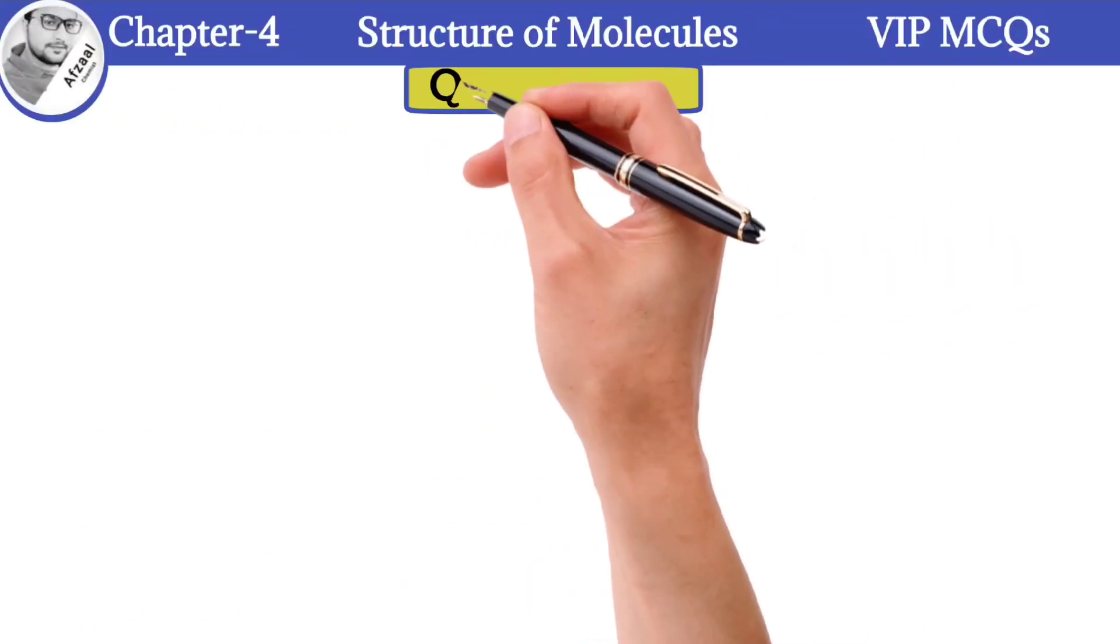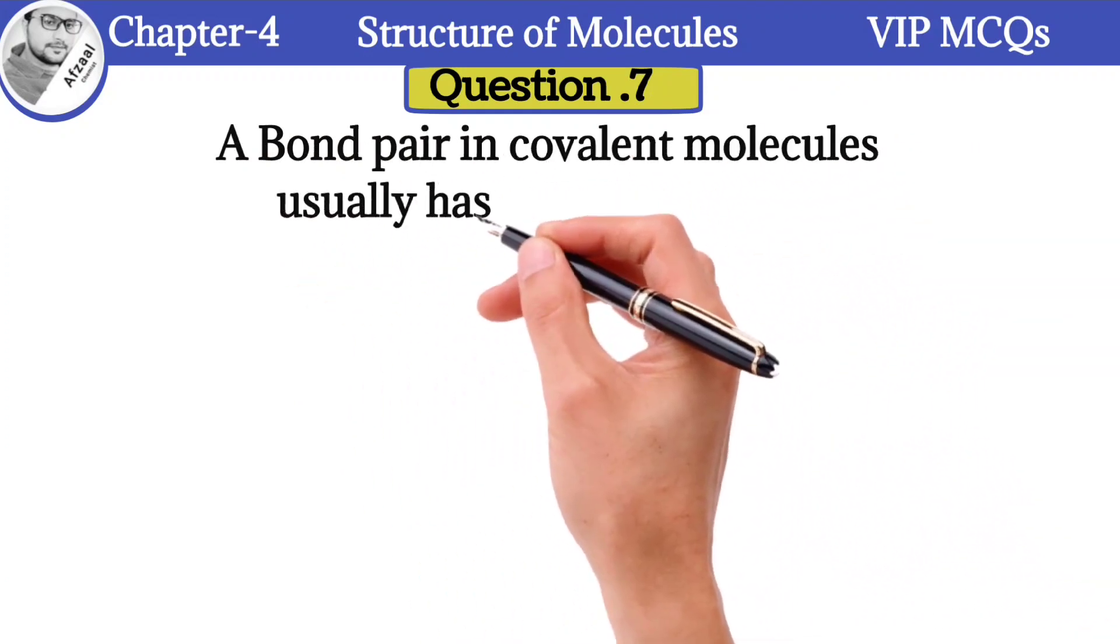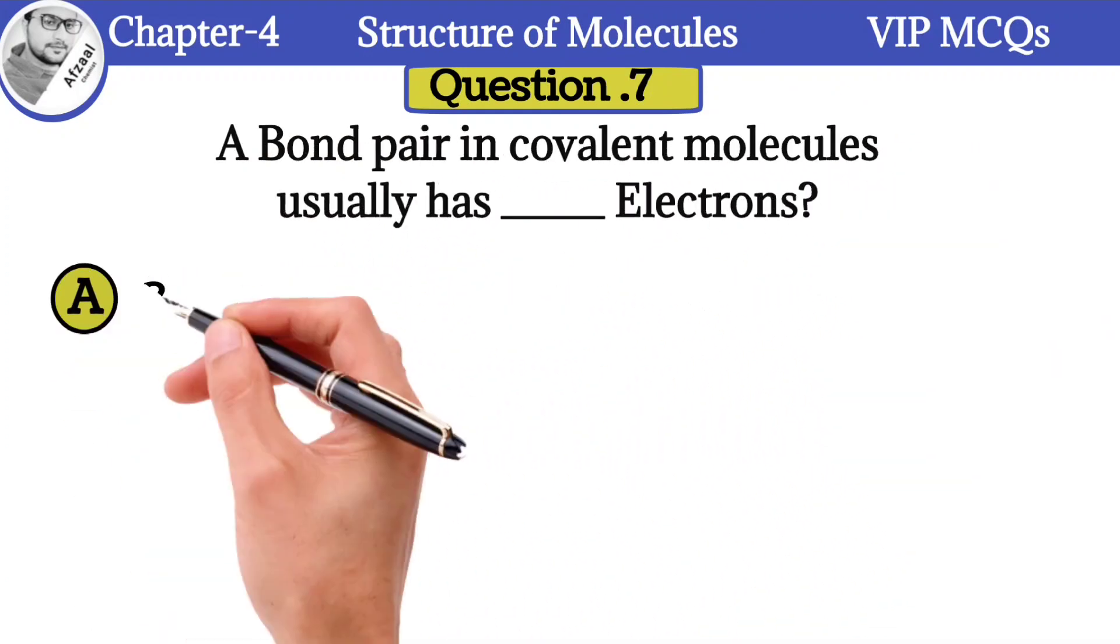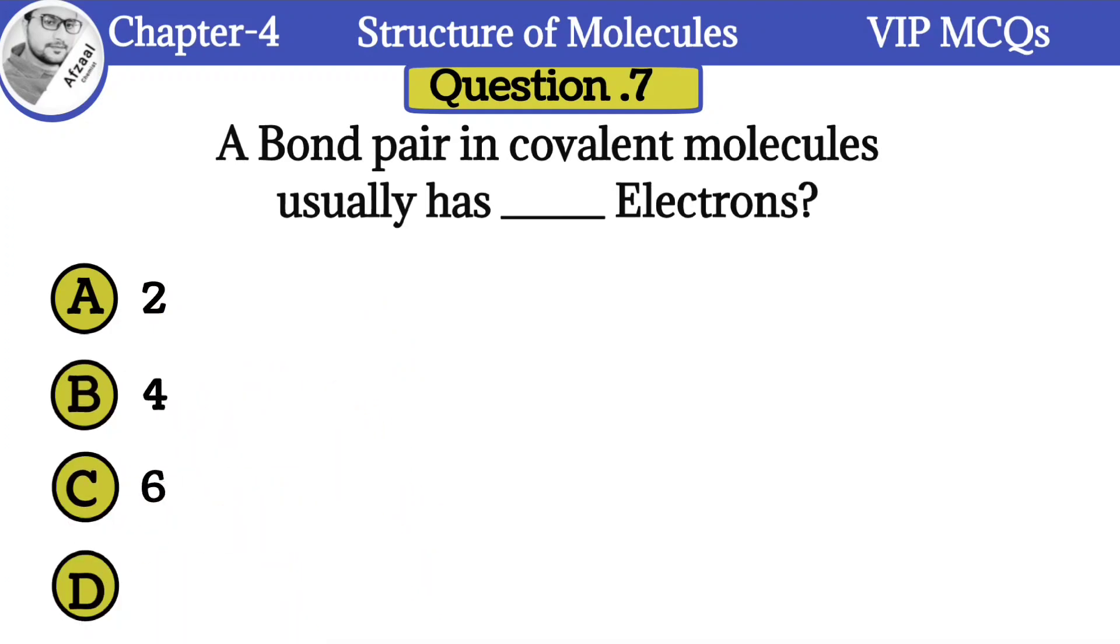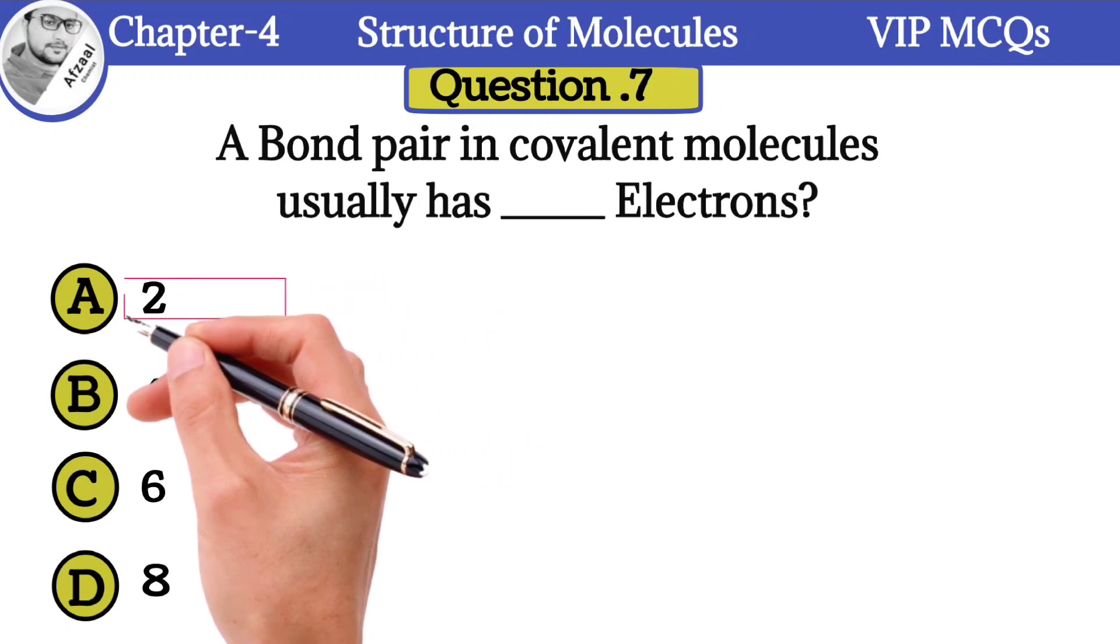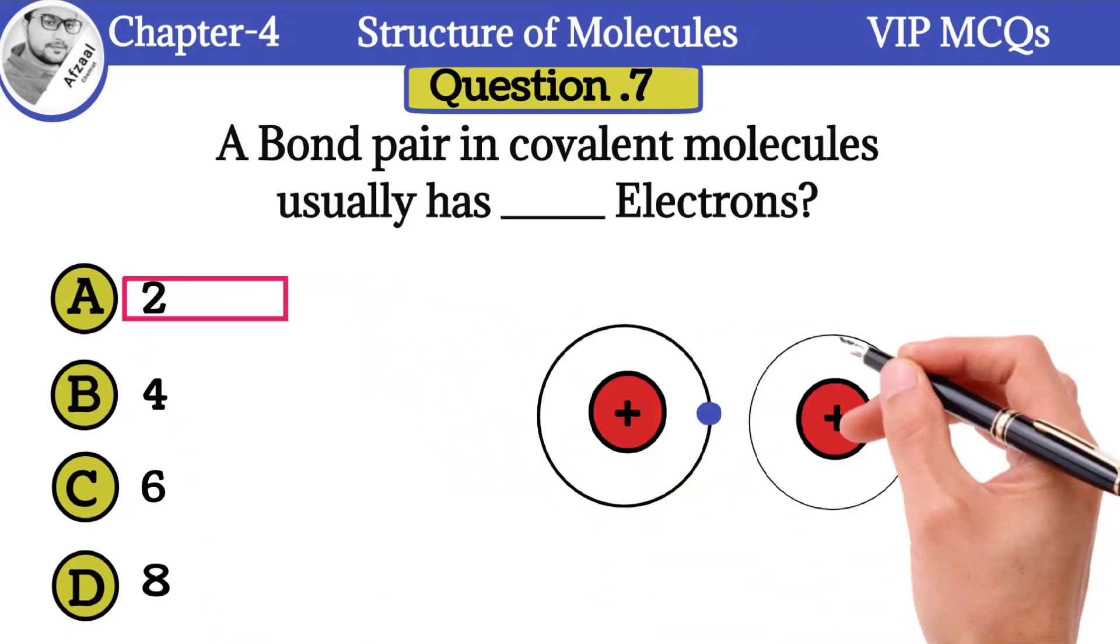Question number 7: A bond pair in covalent molecules usually has how many electrons: A) 2, B) 4, C) 6, D) 8. The correct option is 2. A bond pair in covalent molecules has two electrons.